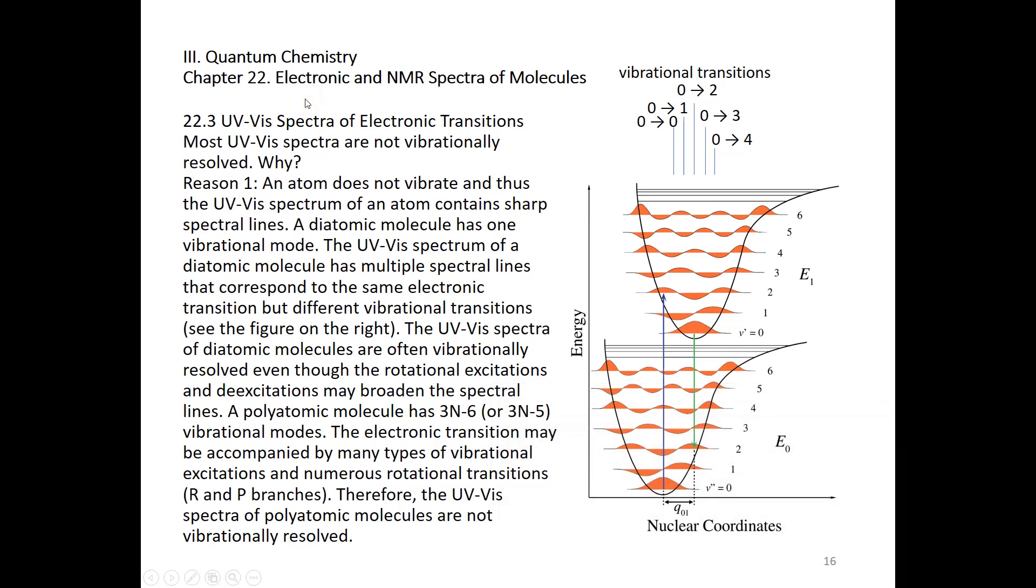Chapter 22, Electronic and NMR Spectra of Molecules, Section 22.3, UV-Vis Spectra of Electronic Transitions.